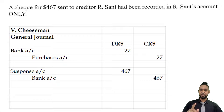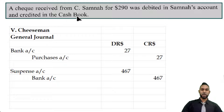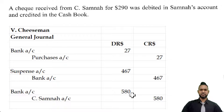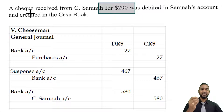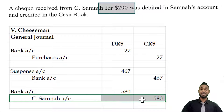Be sure to check out the errors playlist — you could go straight to the suspense account video if you feel comfortable with errors before suspense accounts. For the third error, a check received from C. SAMNA for $290 was debited in SAMNA's account and credited in the cash book — a complete reversal. We were supposed to debit the cash book and credit SAMNA, so that's what we'll do, but for double the amount: $580. Why double? Once to cancel the error, and once to populate the information as it should have been entered. Two debits of $290 to bank equals one debit of $580; similarly, two credits of $290 to SAMNA equals one credit of $580.